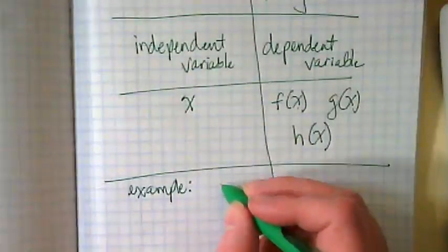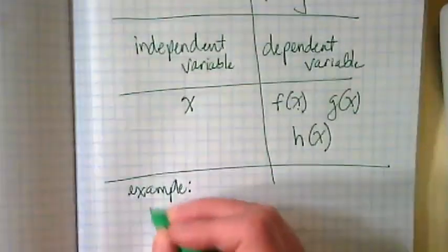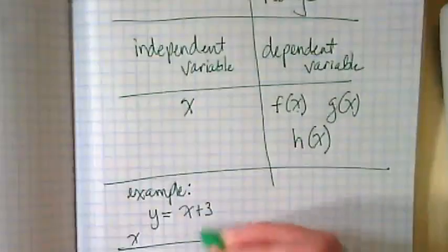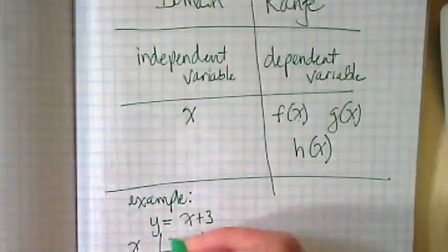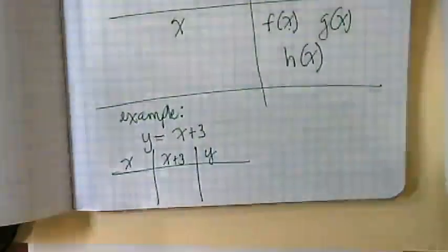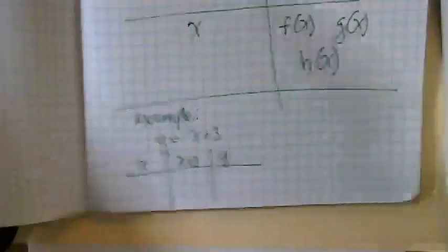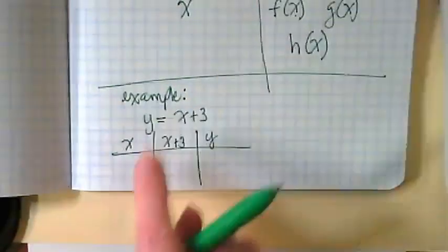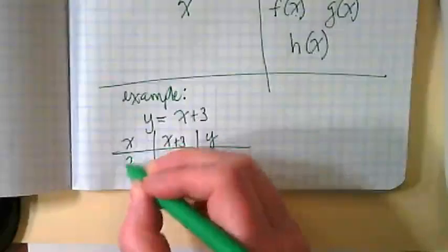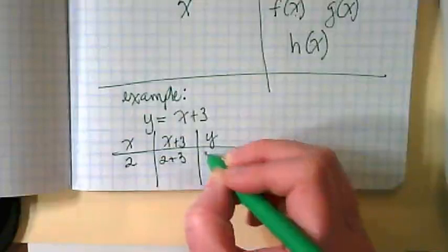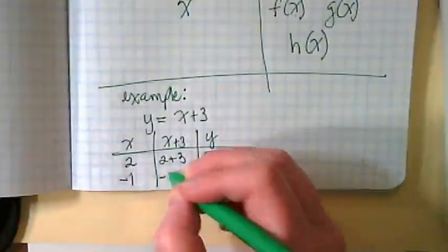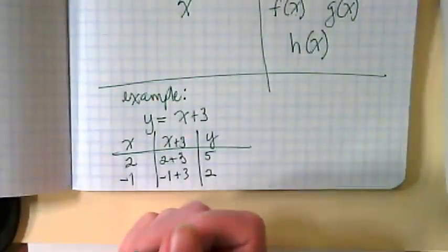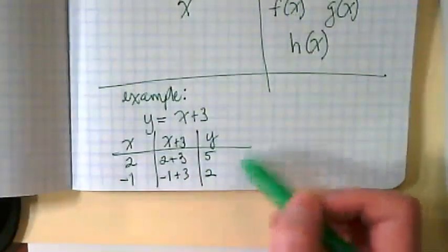In our last unit on linear equations where we might have said y is equal to x plus 3. And then we might have made a table with the rule in the middle. I don't mean that we won't continue doing this. So if I say that x is 2, this would become 2 plus 3 equals 5. If I said x is negative 1, negative 1 plus 3 would equal 2.